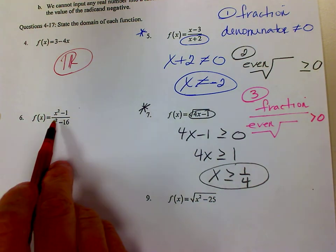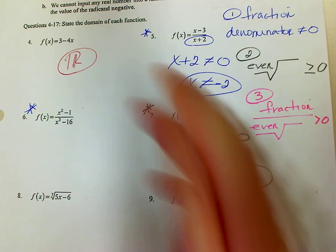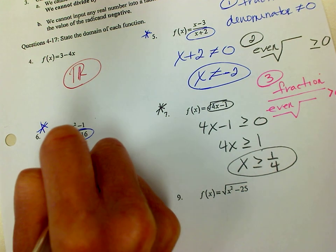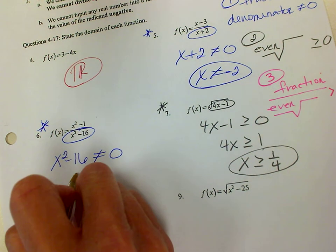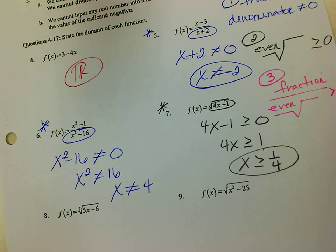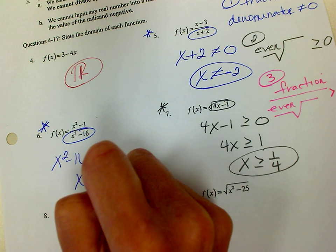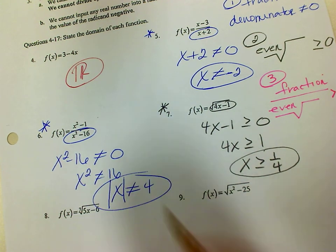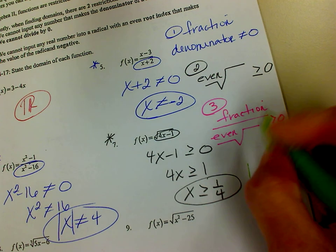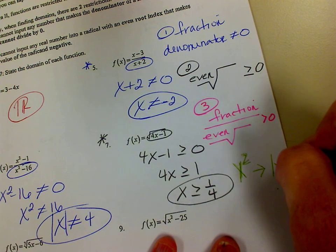Number 6 — I do have a fraction, that's all I have. I don't have an even root radical in the denominator. So number 6 is just a fraction, meaning the denominator, which is all of that, cannot equal 0. So x squared minus 16 cannot equal 0. I'm going to add over the 16, and if I take the square root, I get that. Since you have an x squared, you have to account for positive 4 and negative 4. So you put an absolute value around it. If I have an x squared in my question, I'm going to have an absolute value of x in the answer.